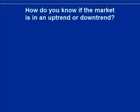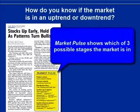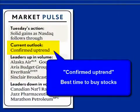The obvious question is: how do you know if the market is in an uptrend or downtrend? The easiest way is to simply check the Big Picture column in IBD each day. The market pulse inside the Big Picture shows you which of three possible stages the market is currently in. The first is confirmed uptrend — the best time to buy stocks.